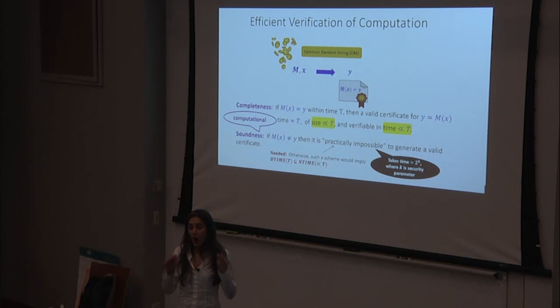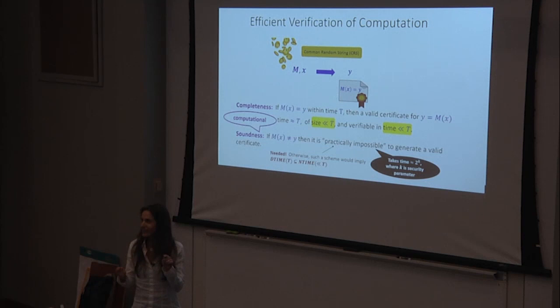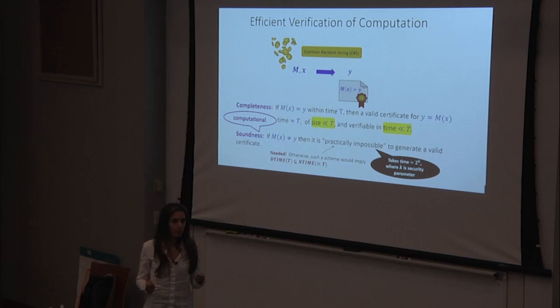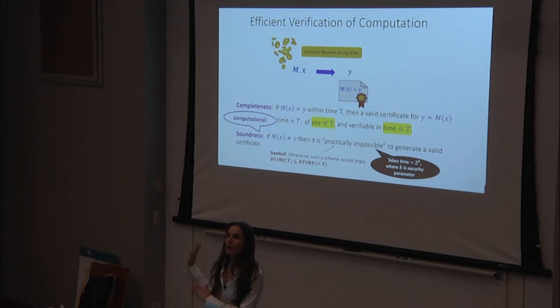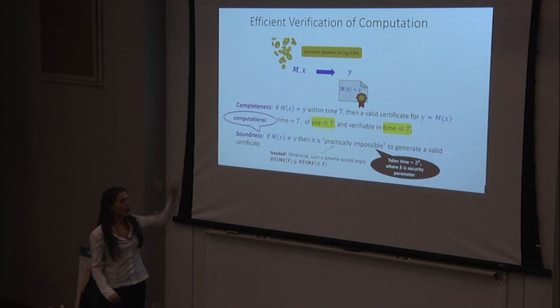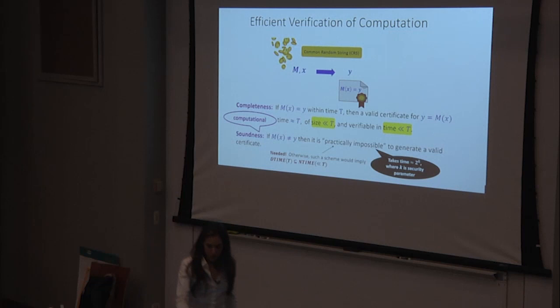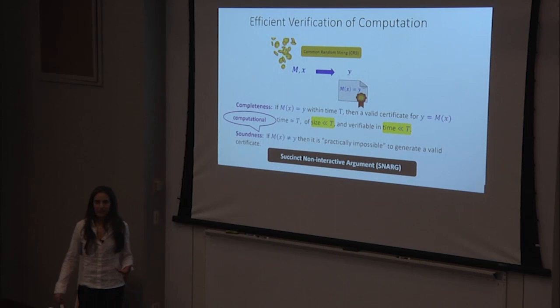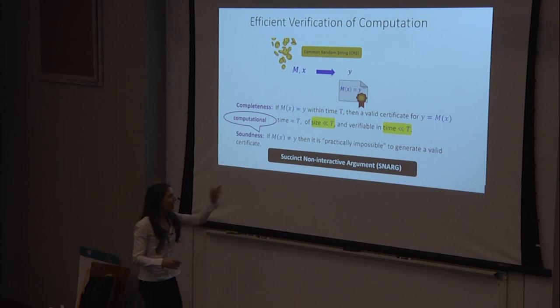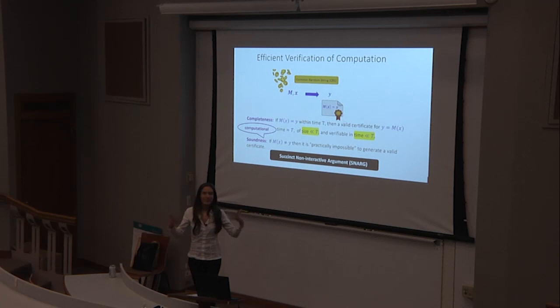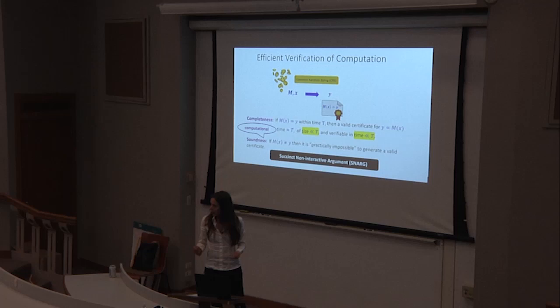Some schemes have a structured common reference string rather than a random one, and agreeing on it is a big bottleneck in practice — sometimes requiring a large multi-party computation to generate. But in the schemes today, it's just a hash function. This overall scheme is called a Succinct Non-Interactive Argument, or SNARG — succinct because the certificate is succinct, non-interactive, and 'argument' refers to computational soundness as opposed to a proof.